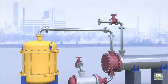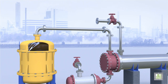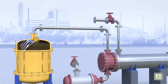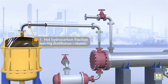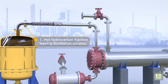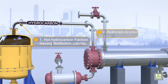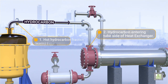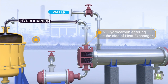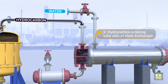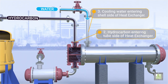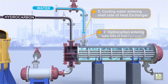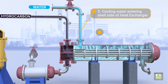Flow pattern: 1. Hot hydrocarbon fraction leaving the distillation column. 2. Hydrocarbon entering the tube side of the heat exchanger. 3. Cooling water entering the shell side of the heat exchanger.